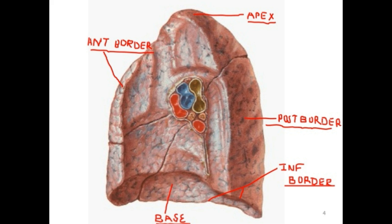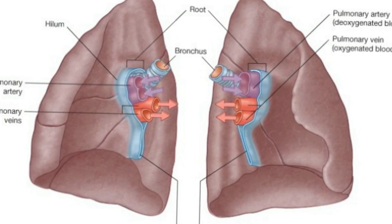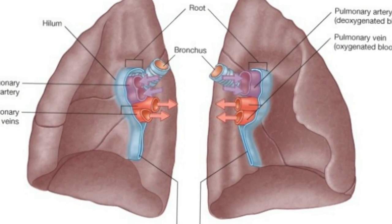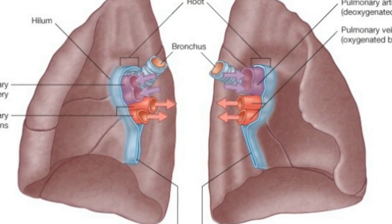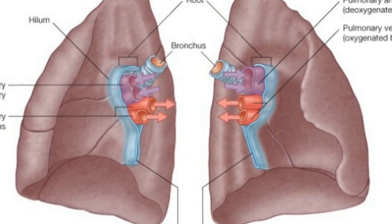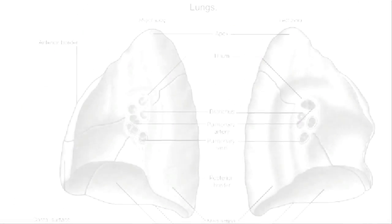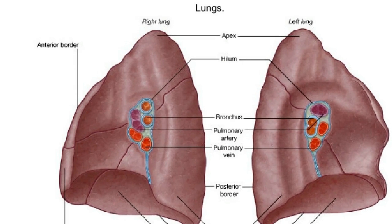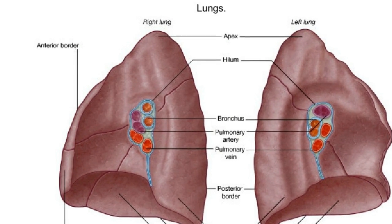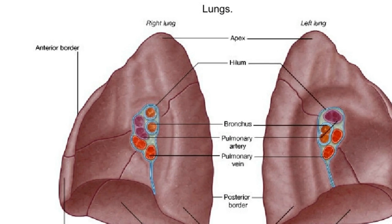The area where the heart, trachea, and other structures are located is called the middle mediastinum. Air reaches the lungs via the trachea, which is commonly called the windpipe. In humans and some other animals, the trachea is a tube that connects the lungs to the upper part of the respiratory system, which consists of the mouth, nasal cavity, pharynx, and larynx.